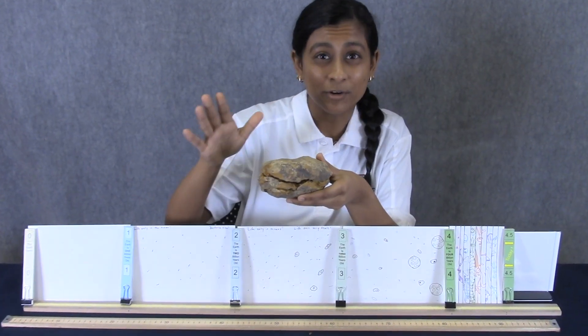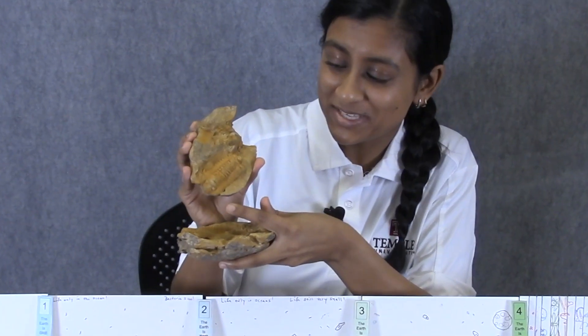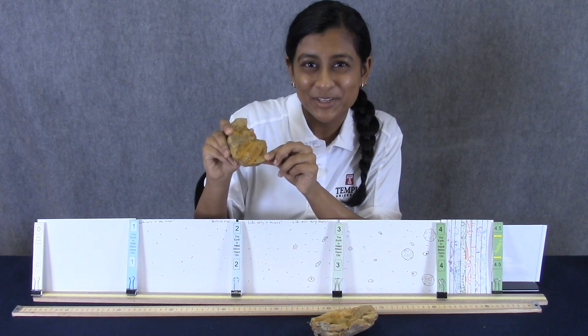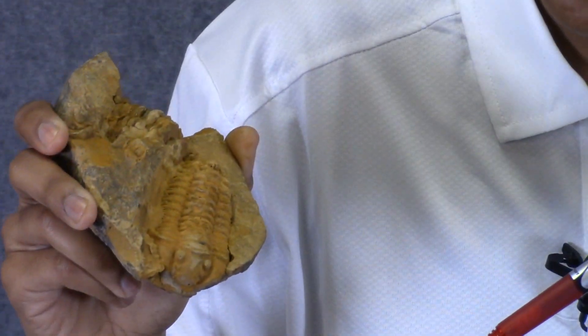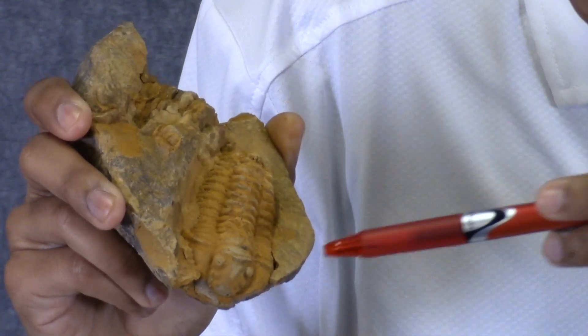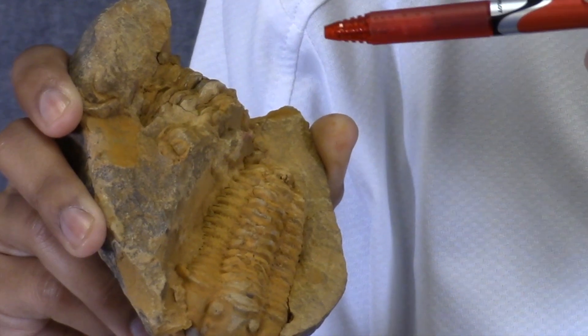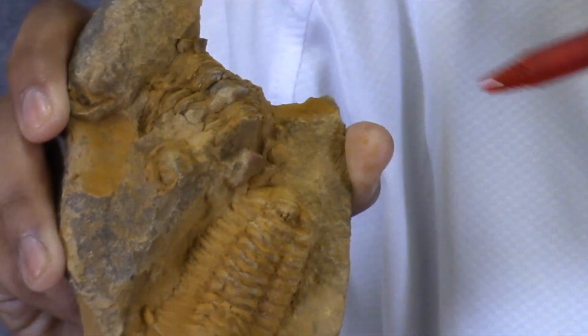This looks like an ordinary rock, but when it's split open, it actually reveals a special kind of animal called a trilobite. Here, let's zoom in a little bit closer. Look how cool! We can actually see the eyes of the trilobite right here, and its body segment up here. It's really hard to see, but there's actually another fossil over here as well.